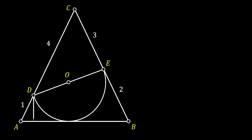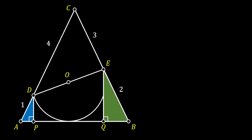From the point D we will pull a line that is perpendicular to the base of our triangle, and we will label this intersection as P. We will do the same for the point E, and label this new intersection as Q. We have now formed two right triangles APD and QBE. You can also notice that the sides AC and CB are congruent, since they both have the same length of five.